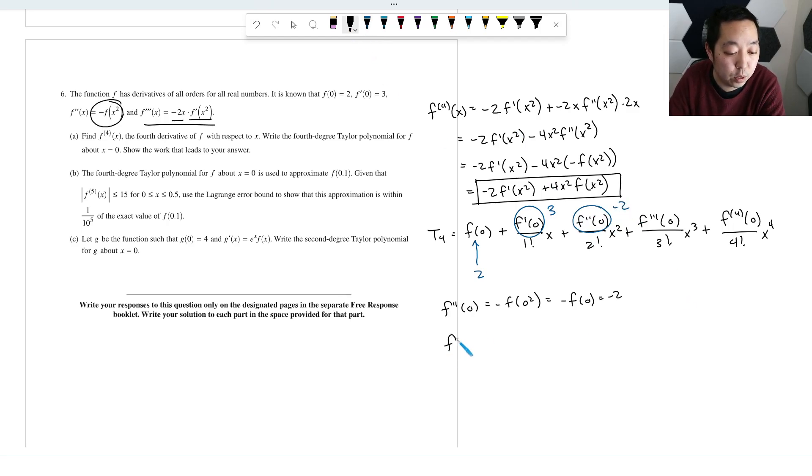And then f'''(0) is this thing. It's -2 times 0, well it doesn't really matter. f'(0)², that's just 0 because 2 times 0 is 0. And then the fourth derivative at 0 is what we just found.